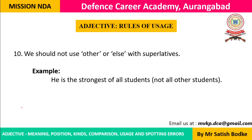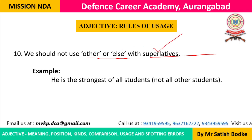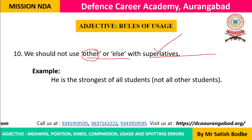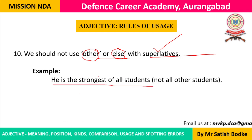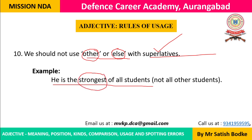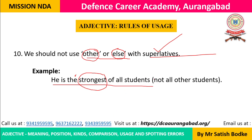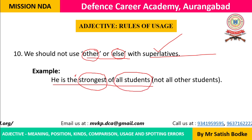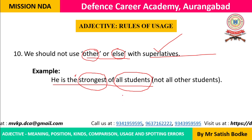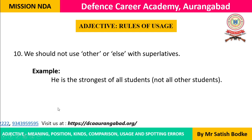Rule 10: Do not use other or else with superlatives. For example: 'He is the strongest of all students' — not 'of any other students'. In superlative degree, the thing being compared is included among all others, so use all students — never any other or else.